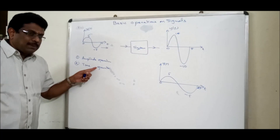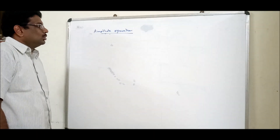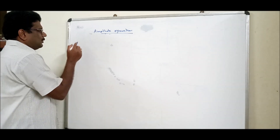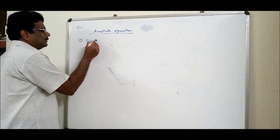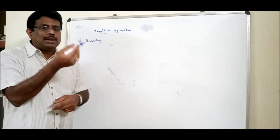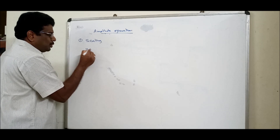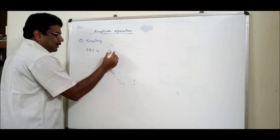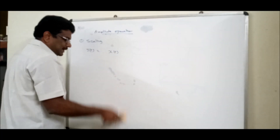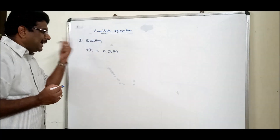Now we will do different types under amplitude and different types under time. Let us start with amplitude operations. There are various types. One is scaling — just now we saw the example where the output was double the input. In general, y(t) equals A times x(t), where A is a constant. This is called the scaling operation.